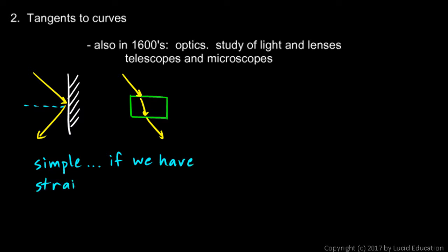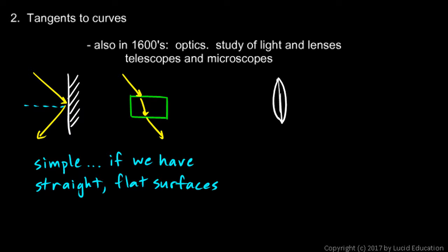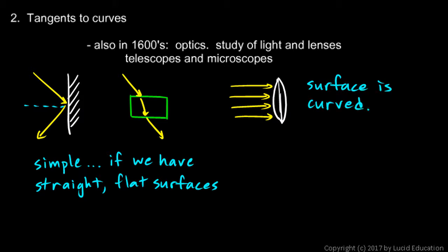With known angles on flat surfaces the problems are straightforward. But as you know, if we're dealing with optics we're often dealing with lenses, and lenses are curved. You might have a shape like this — a cross section of a lens — and light rays coming into the lens might be parallel, but every point at which the light strikes the surface of that lens it's hitting at a different angle, because the surface is curved. So with a curved surface there's a different angle at each point.